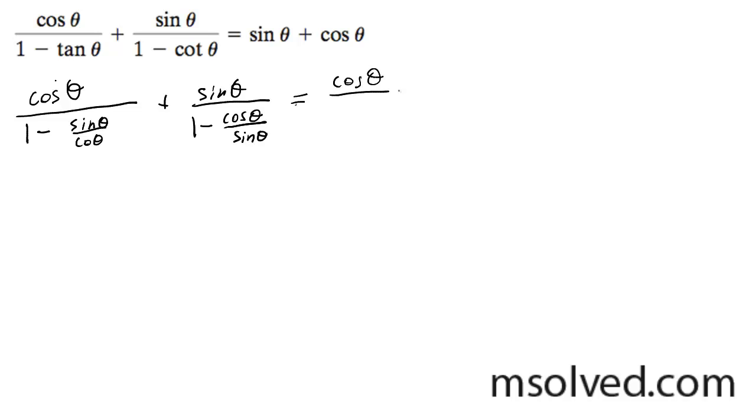So this is going to be cosine theta still on top. This is going to become cosine theta minus sine theta over cosine theta.